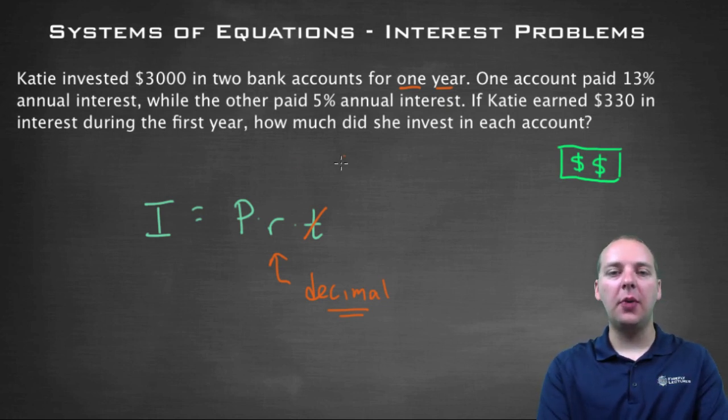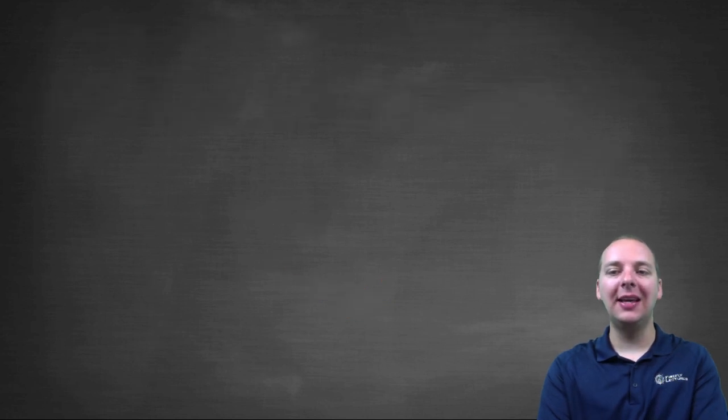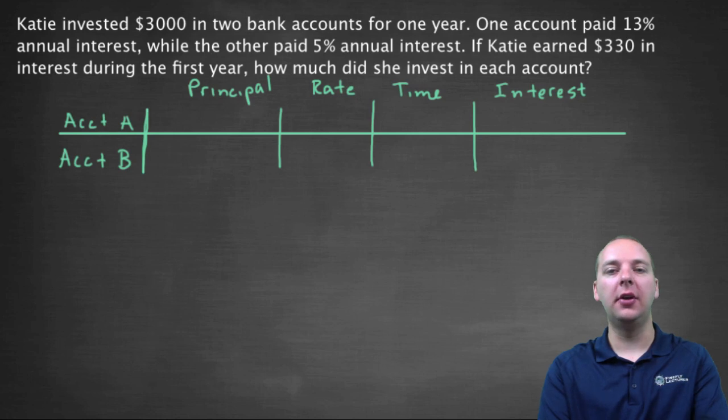So let's move on to how we would actually solve this. I would highly recommend making a table. Tables are very helpful when you do these types of problems. We're going to make a row for each account and we're going to have all the information needed: the principal, the rate, the time, and the interest that you're getting from each of these accounts.